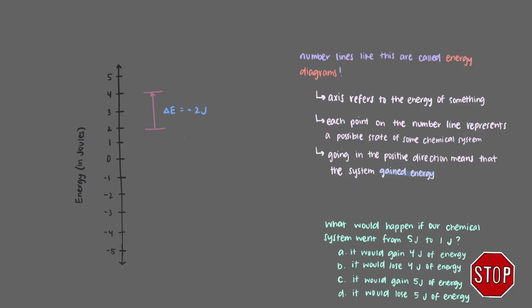What would happen if our chemical system went from 5 joules to 1 joule? To go from 5 joules to 1 joule, we move in the negative direction. When we move in this direction, the chemical system loses energy. So delta E is negative 4 joules. Using these types of number lines, energy diagrams, is very helpful for keeping track of changes in energy, especially when dealing with multiple changes.